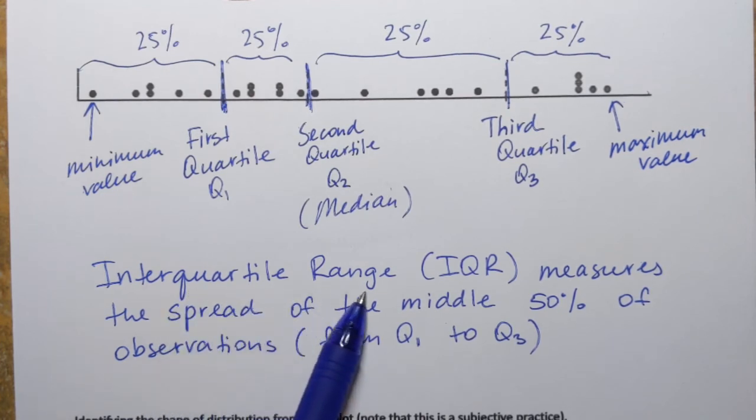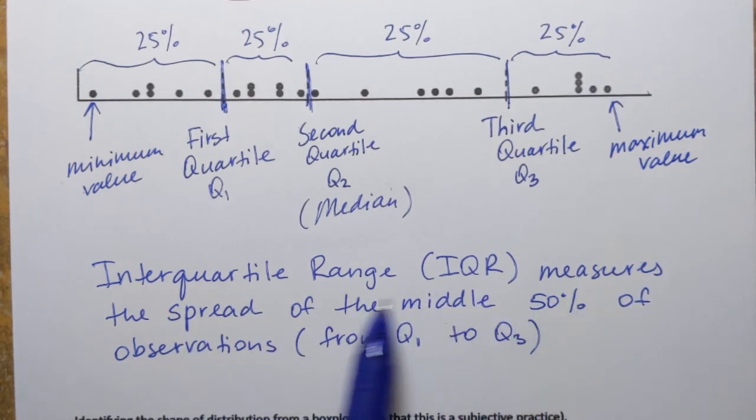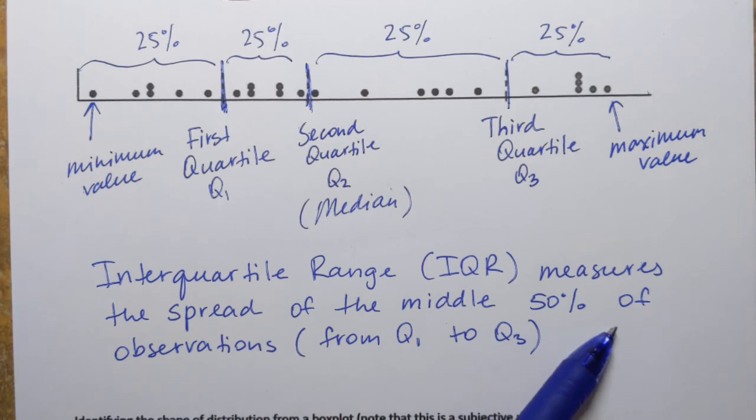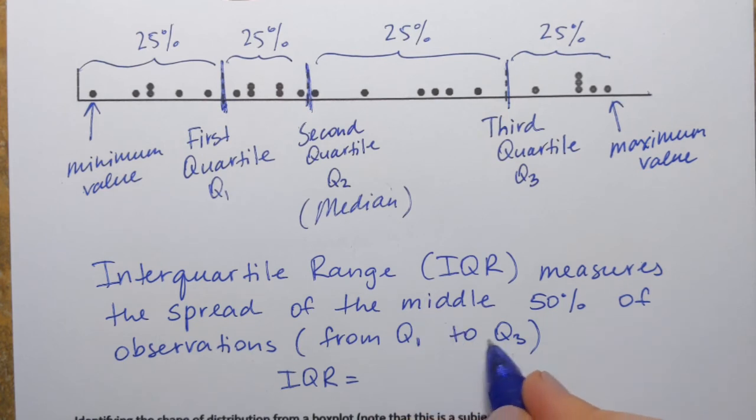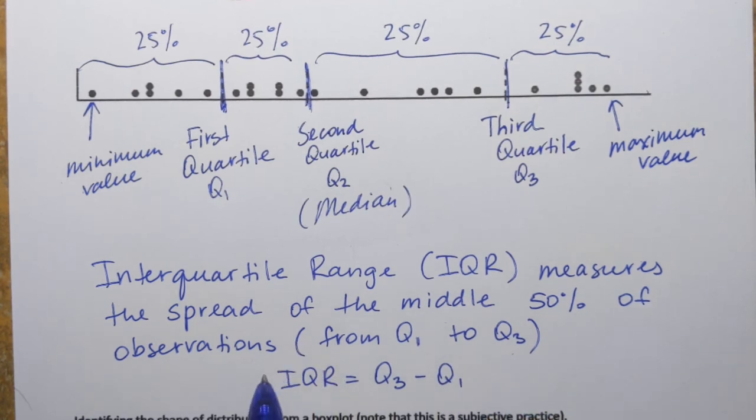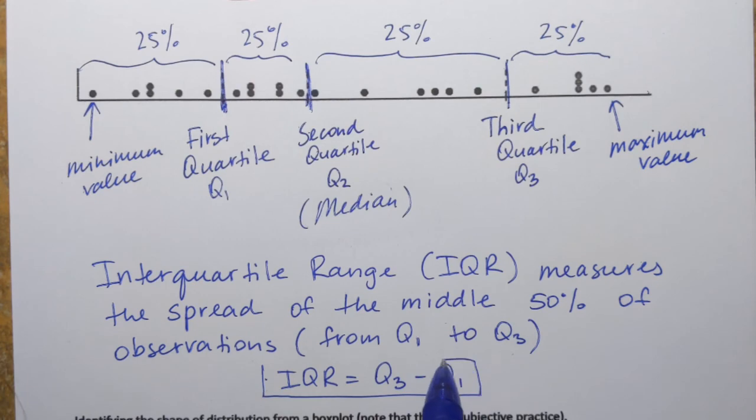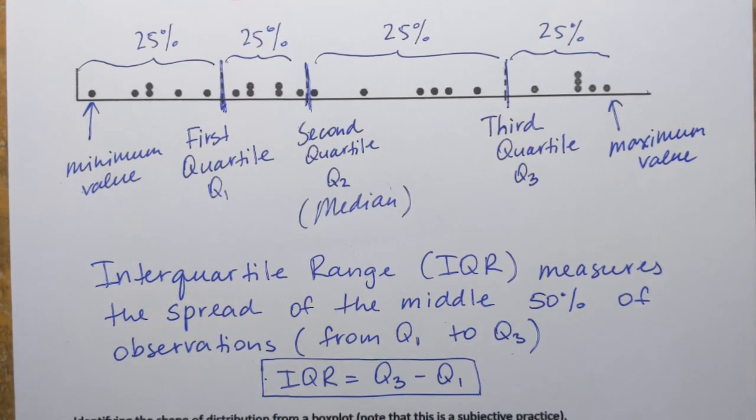So interquartile range IQR measures the spread of the middle 50% of observations from Q1 to Q3. And in fact, we can calculate what it equals to. So to find IQR, as with the range, you take the rightmost value, which is Q3, and subtract the leftmost value, Q1. So to find IQR, you compute this difference, Q3 minus Q1.